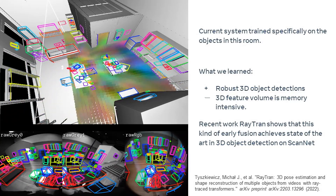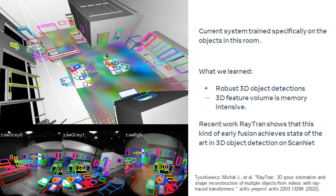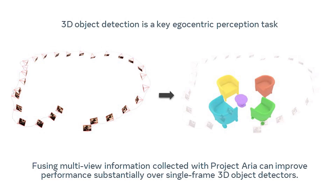Generally, we've seen that this end-to-end network performs more robustly for 3D object detection, with the slight downside that the feature volume is memory intensive, making training a bit harder. I want to highlight recent work published on arXiv called RayTran, which shows in a very similar approach that this kind of approach is the state-of-the-art performance on ScanNet for 3D object detection — basically taking our crown from ODAM, which was previously state-of-the-art. So all in all, 3D object detection is a key egocentric perception task, and by fusing multi-view information from Project ARIA, we can substantially improve performance over single-frame detectors.